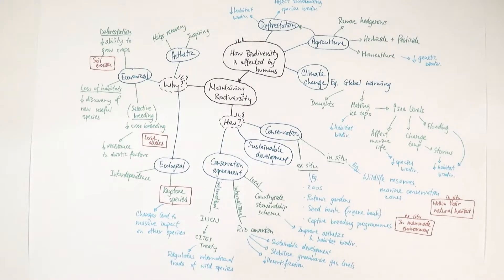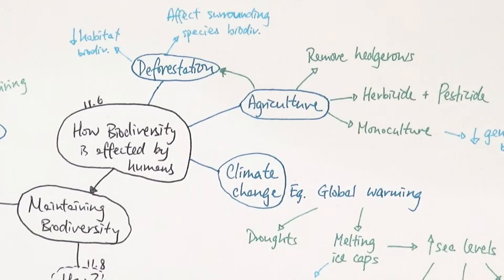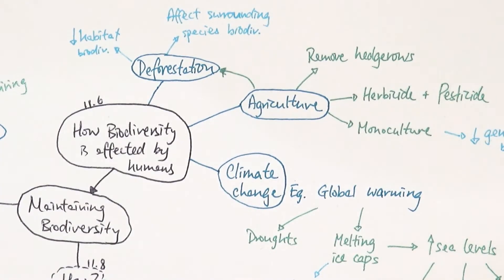Let's start with how biodiversity is reduced by human activity. One tip for studying this half of the chapter: the textbook is extremely wordy with a lot of detail. Refer to the specifications, see exactly what you need to know, pick some examples for each spec point, and practice exam questions. Learn the content using the mark scheme rather than memorizing everything from the textbook. Everything in this mind map is a demonstration of how I've done it.